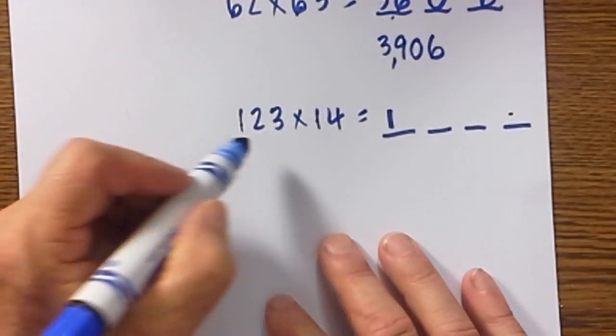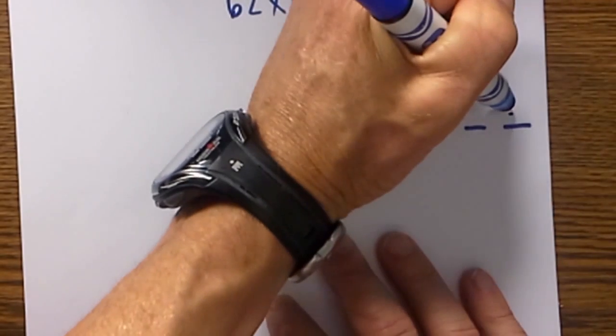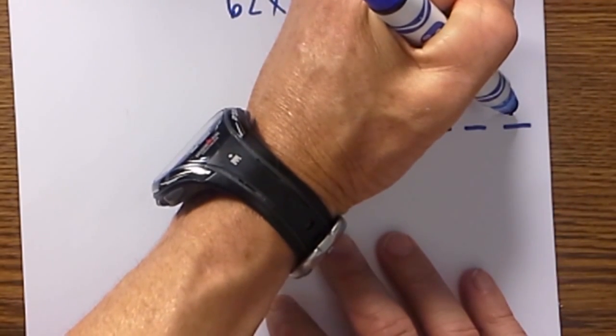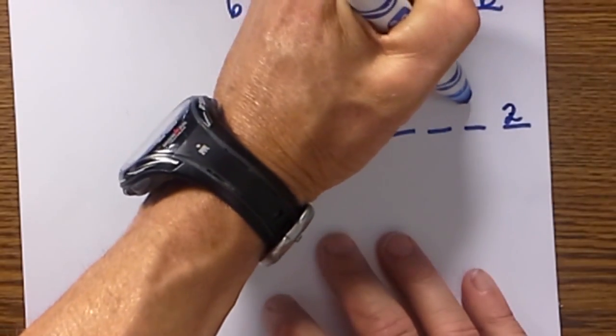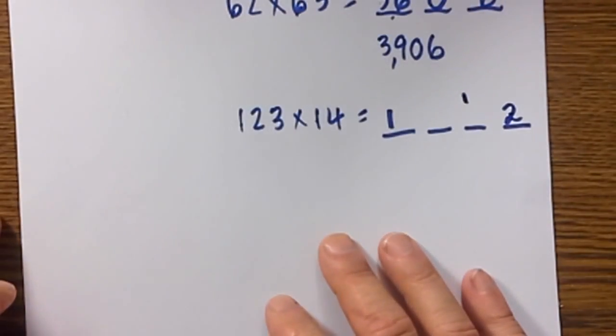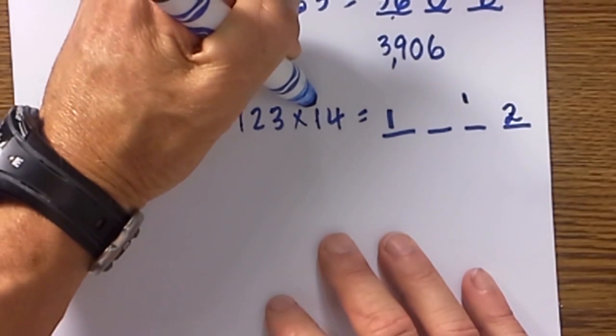For the last digit you take the last digit of each number 3 times 4 is 12 but what I am going to have to do is carry the 1 to the left and then apply the rainbow method of multiplication.